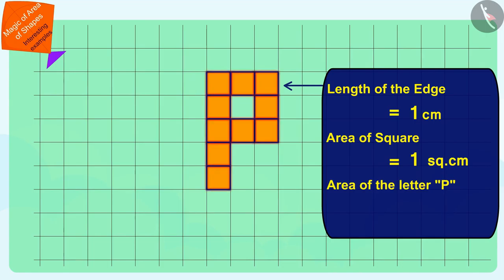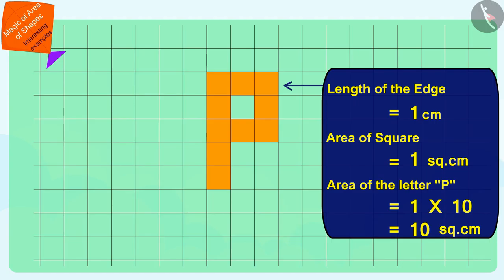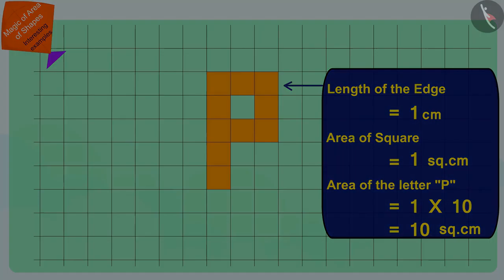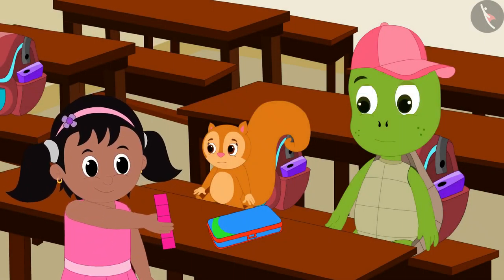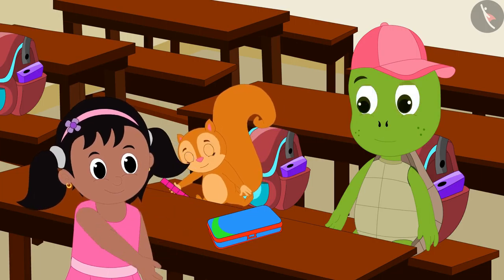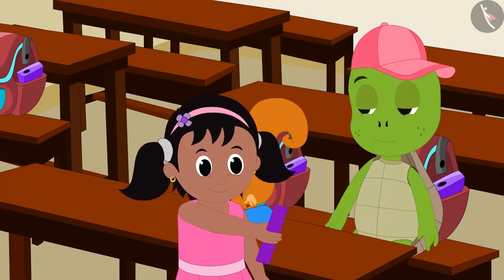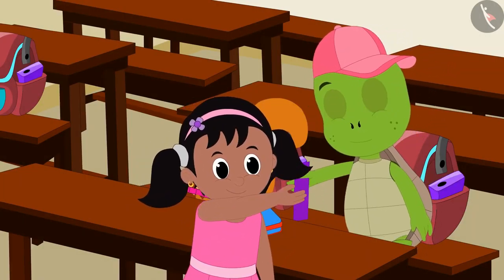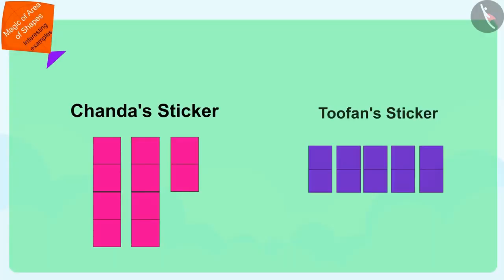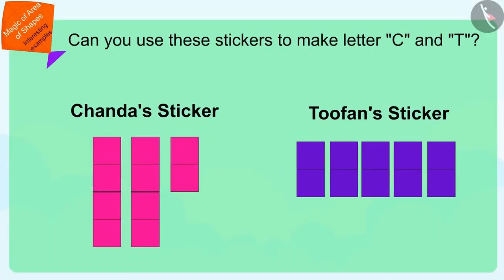Pinky gave ten stickers each to both Chanda and Tufan to make their own letters. Children, can you use these ten square shaped stickers to make Chanda's name letter C and the name Tufan T? If you want, you can find a solution by stopping the video.